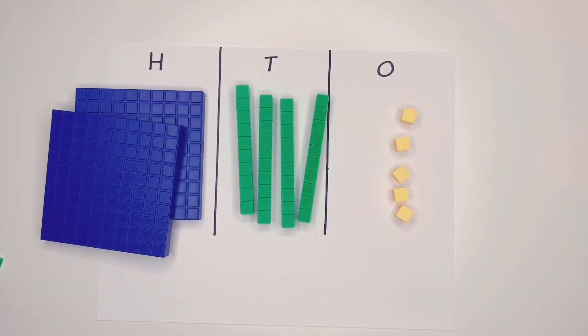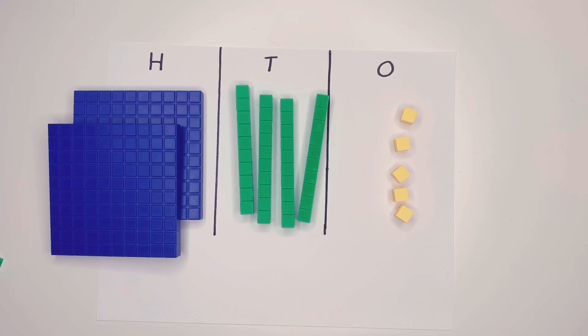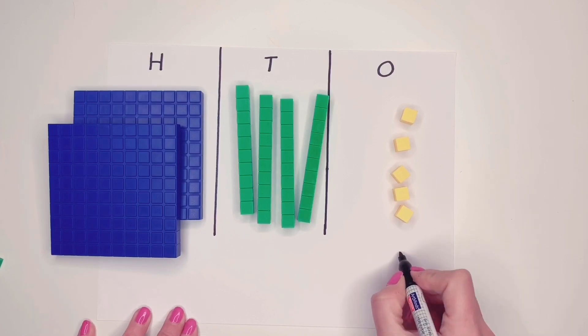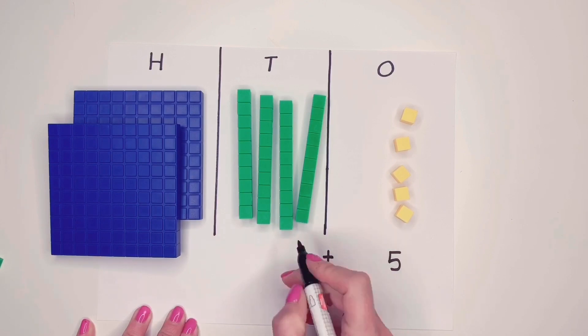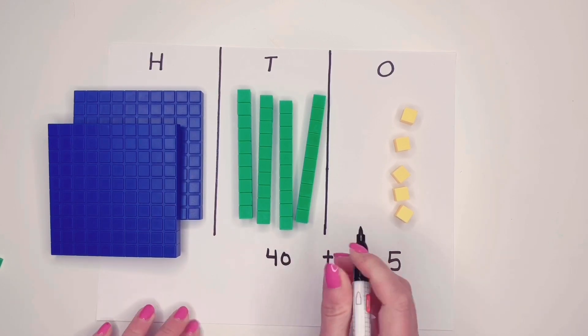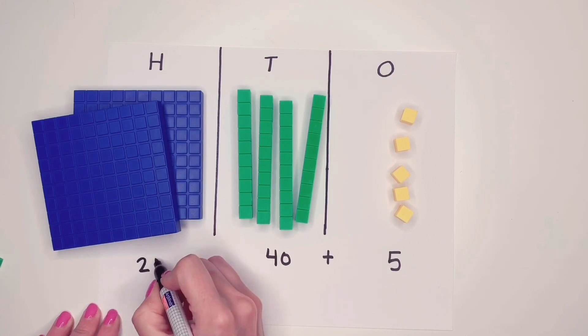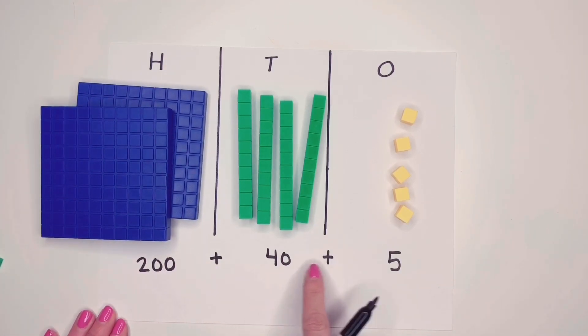So here we have hundreds and we have tens and we have ones. This can be represented with expanded form. So we have five ones, four tens which is really forty, and then we have two hundreds. So we've expanded our number out into 200 plus 40 plus 5 and we know that that equals 245.